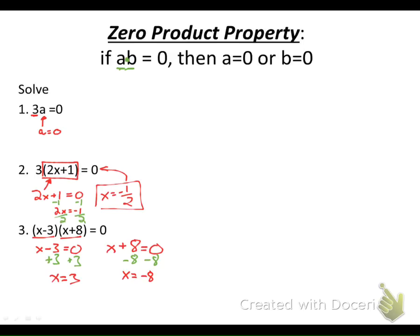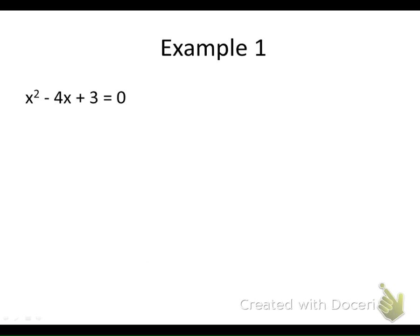Now that we've recapped how to use the zero product property, let's see it in action. We have a quadratic equation, and there are a bunch of different ways to solve quadratic equations. In this one we're going to start by factoring, because once we factor and rewrite this trinomial as something times something equal to zero, we can just set each of those factors equal to zero and solve.